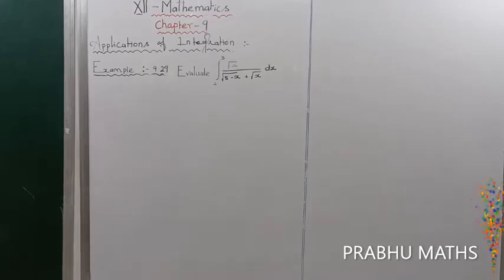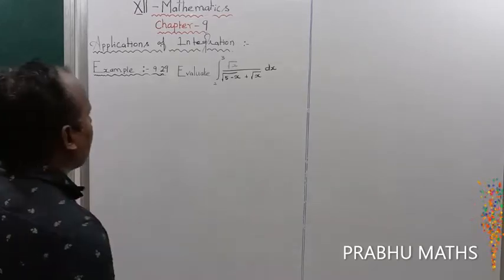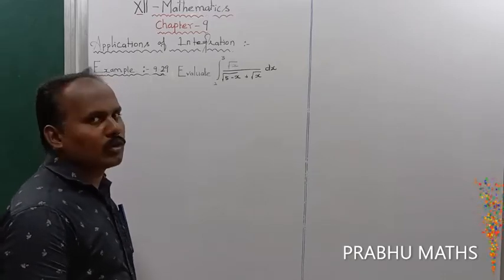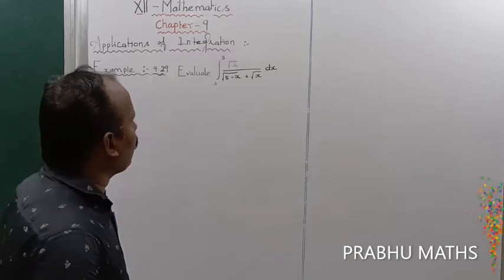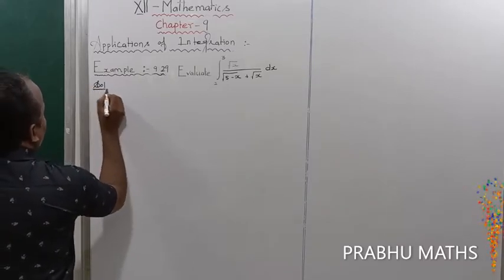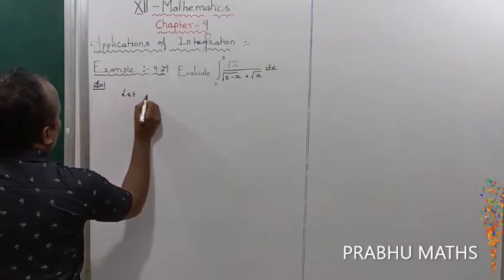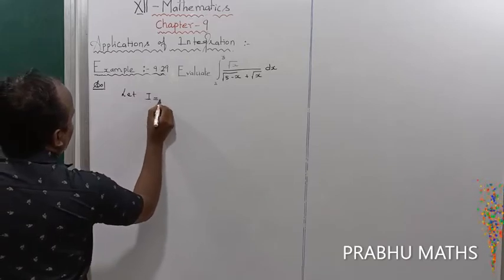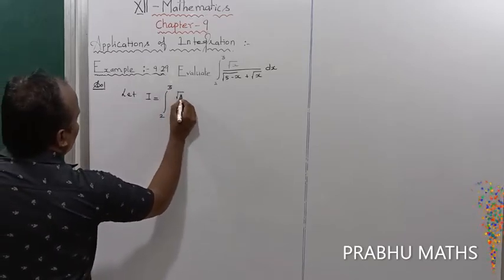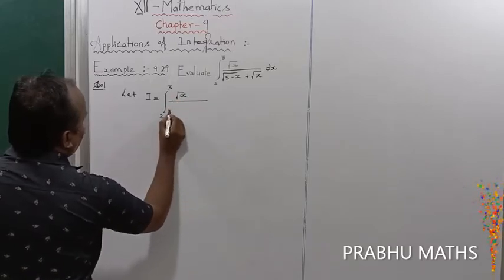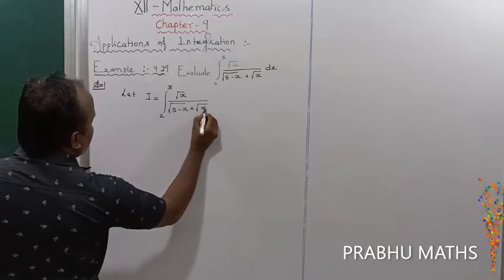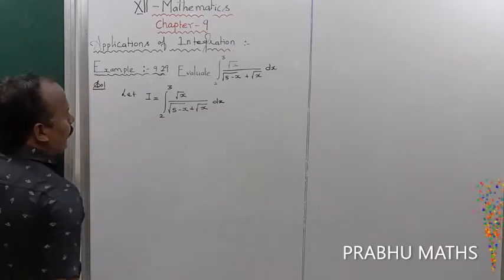Example 9.29: Evaluate the integral from 2 to 3 of root x divided by root of (5 minus x) plus root of x, into dx. Solution: first of all, let us consider the given integral as I, so I is equal to integral from 2 to 3 of root x divided by root of (5 minus x) plus root of x, into dx.